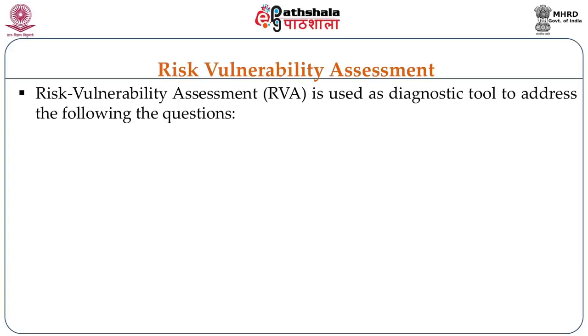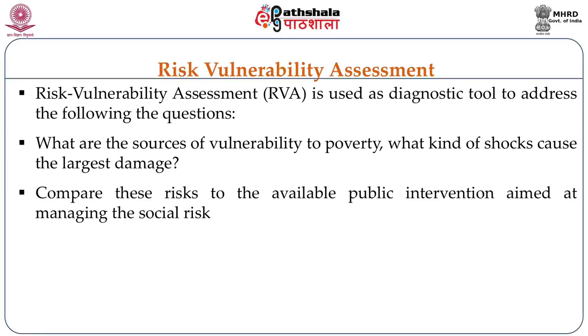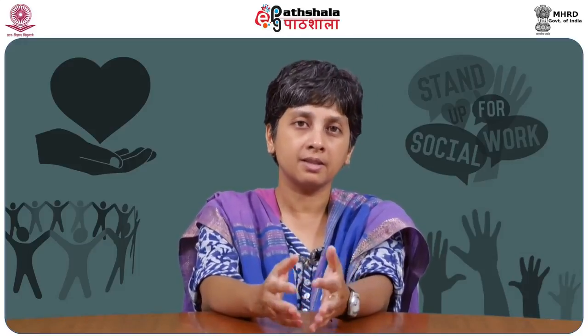There is a risk vulnerability assessment methodology that the World Bank and SRM policy framers have created, which enables organizations and societies to map the extent to which groups and communities face risks and how vulnerable they are. Key questions include: what are the main sources of vulnerability to poverty, and what kinds of shocks cause the largest damage? These risks are then compared against available public interventions to understand whether gaps in access, affordability, and reach exist.